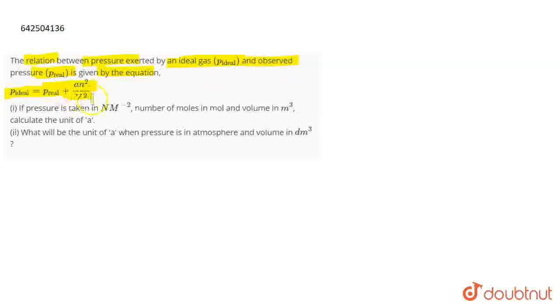So you are given an equation that relates the ideal pressure with the real pressure. The first part of the question is: if the pressure is taken in Newton per meter squared, the number of moles in mol and the volume in meter cubed, calculate the value of the unit of A. So talking about the first part of the question.